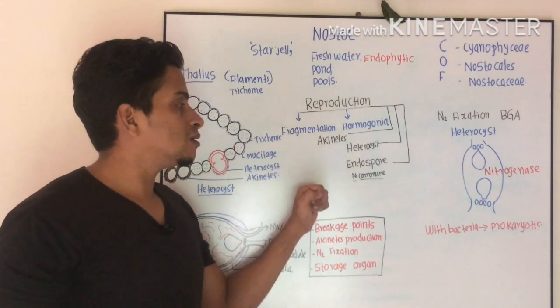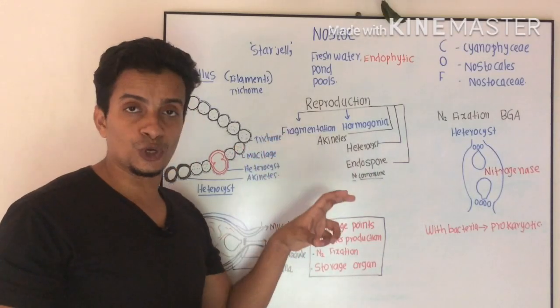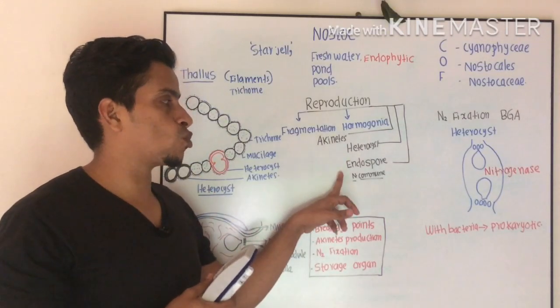Endospore: in Nostoc, an endogenously produced spore. The spore is produced within the cell itself. That is endospore.